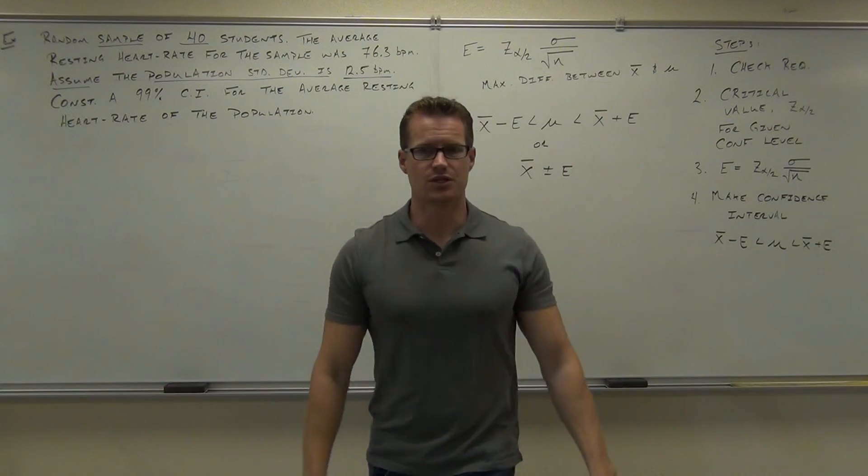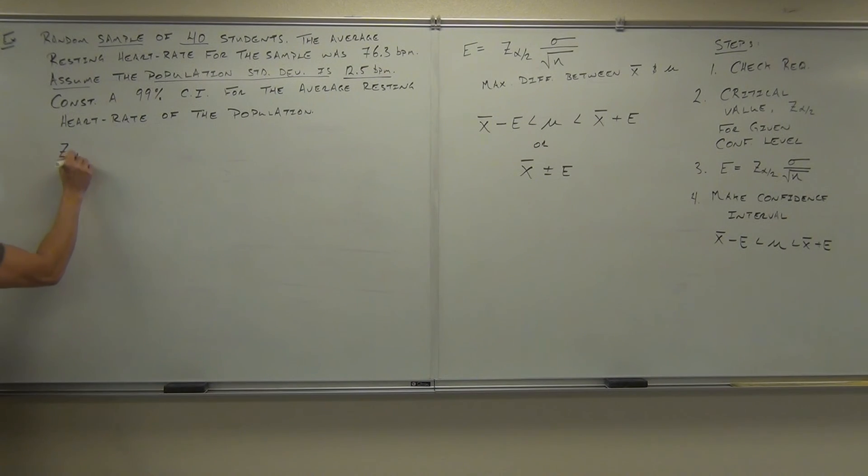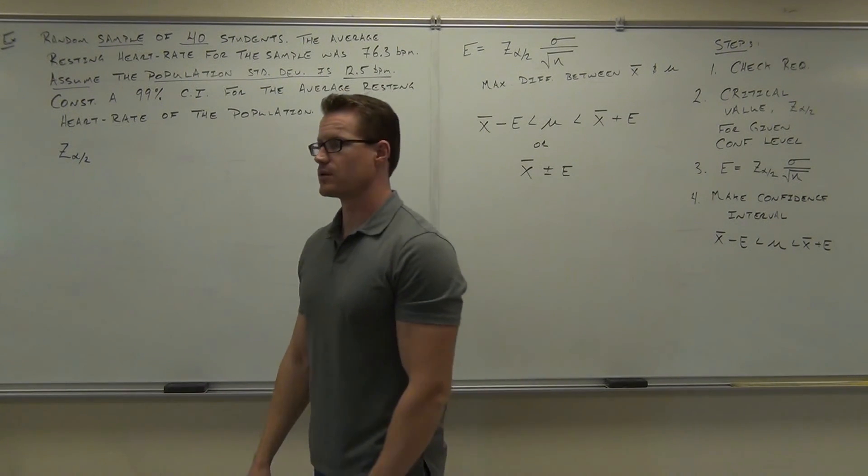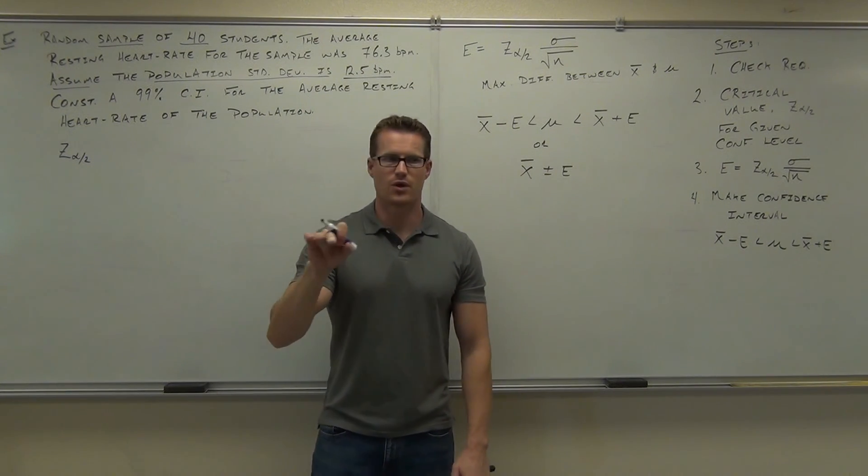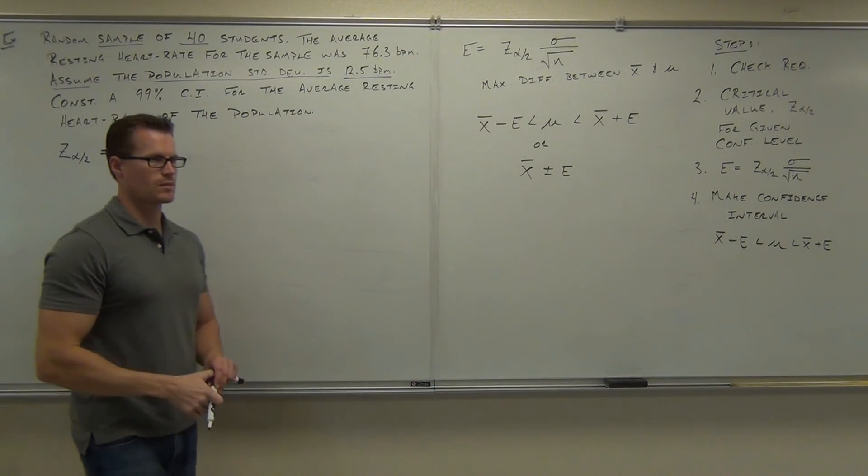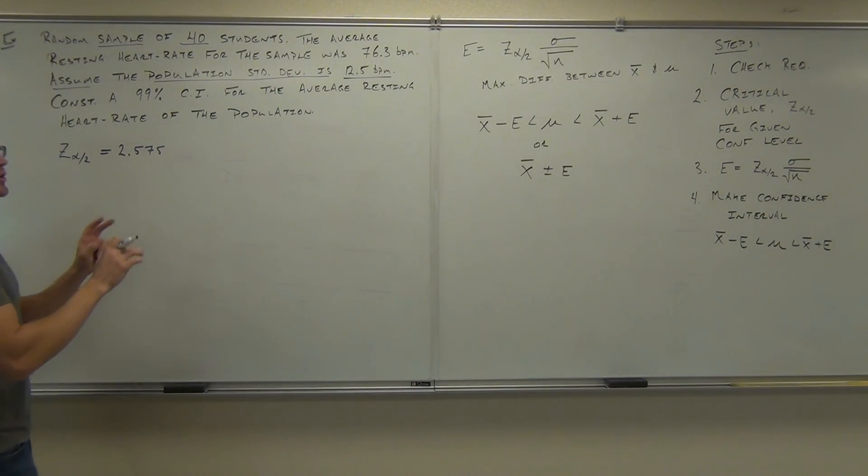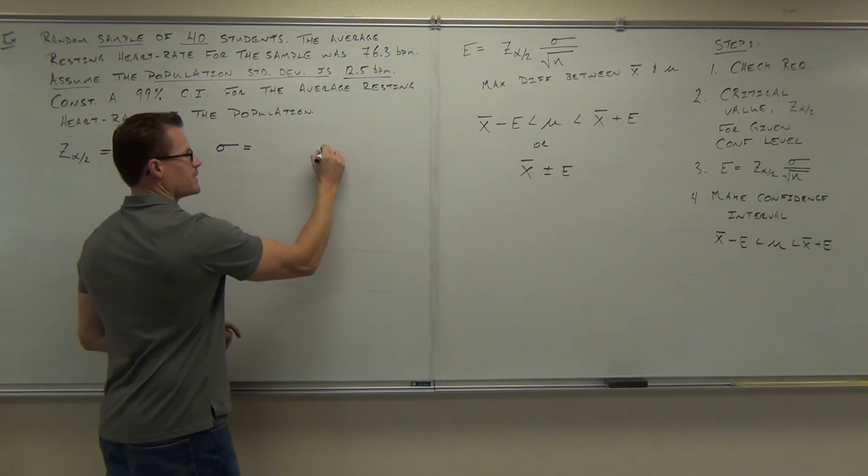The second thing we've got to do, we've got to identify our critical value. That's our Z alpha over 2. And it's going to come from the confidence level. In this case, can you tell me what the confidence level is? 99%. 99% confidence level. Very good. Can you tell me the critical value for a 99% confidence level? 2.575. Very good. 2.575. Now, the next part says we're supposed to find E, but there's a couple of the letters we need to signify. So before we get to our E, not only are we going to have a Z alpha over 2, because that's part of it, I also want you to explicitly list out, it means put that on your paper, your sigma, and your N.